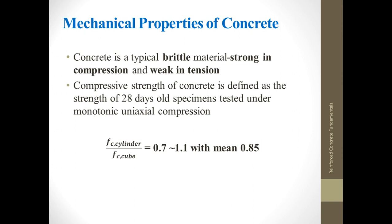This compressive strength is nominated as the 28-day compressive strength. The specimens for these tests can either be a cylinder or a cube. The failure load for a cube specimen is much higher compared to the cylindrical specimen because of differences in their cross-sectional areas, and testing cube specimens requires greater capacity testing machines. When we compare the results, the ratio of cylinder strength to cube strength varies from 0.7 to 1.1, with a mean value of 0.85.